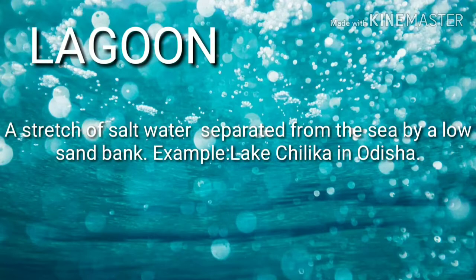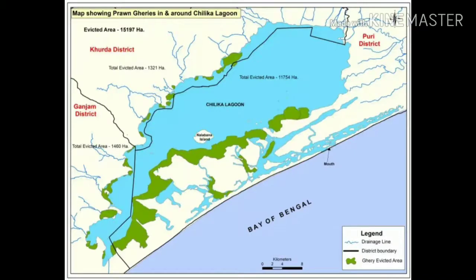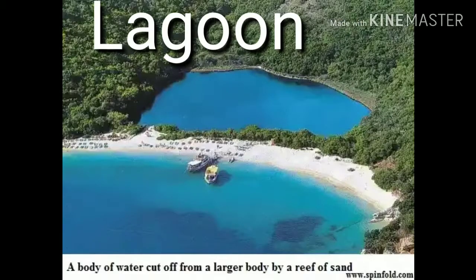Lagoon: A lagoon is a stretch of salt water separated from the sea by a low sand bank. For example, Lake Chilika in Odisha. The map shown here highlights Chilika Lake, and this picture shows what a lagoon looks like.